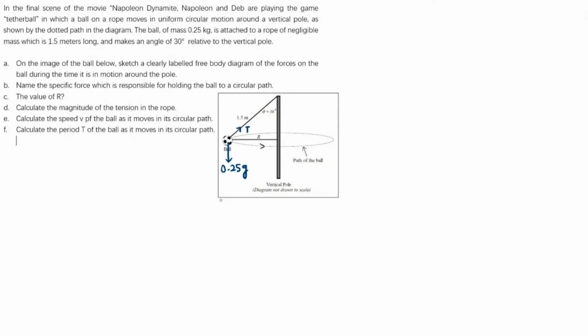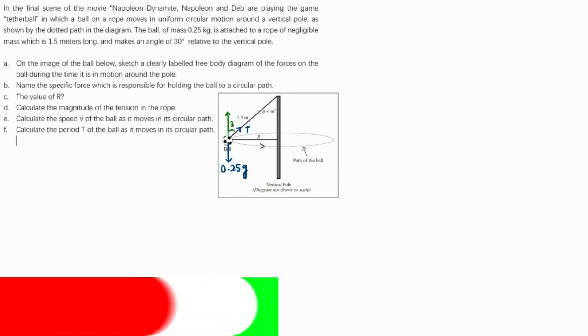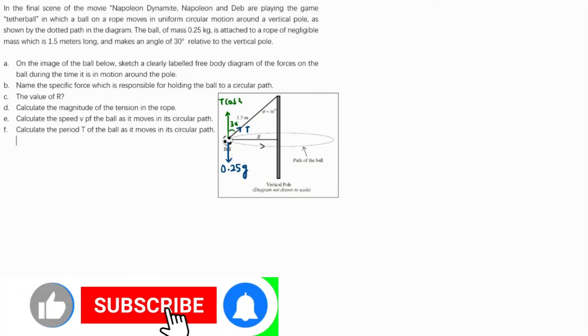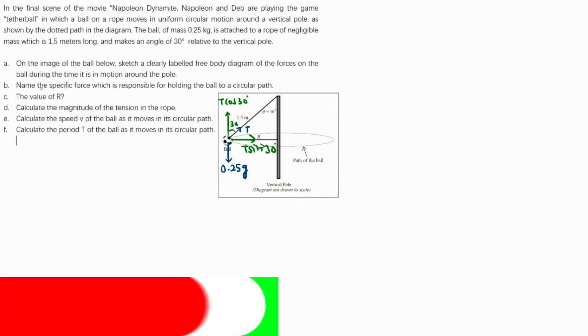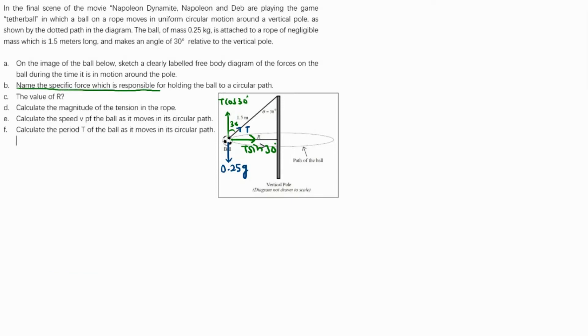We have to make the components of the force because the net force providing the centripetal acceleration should be towards the center. If we make the components, if this is 30 then this is also 30 because they are alternate angles. This will be T cosine 30 degrees and this will be T sine 30 degrees.